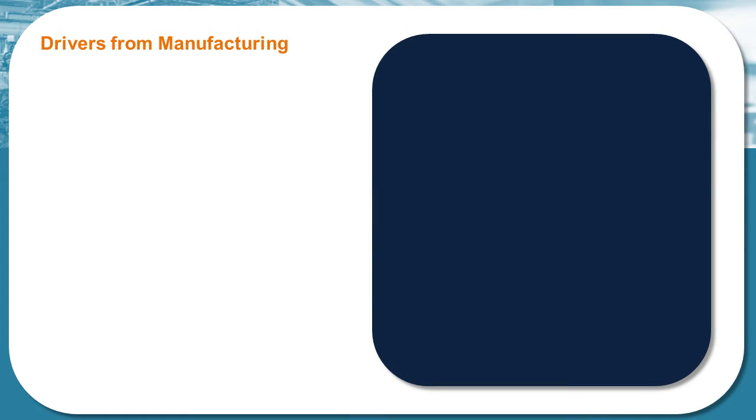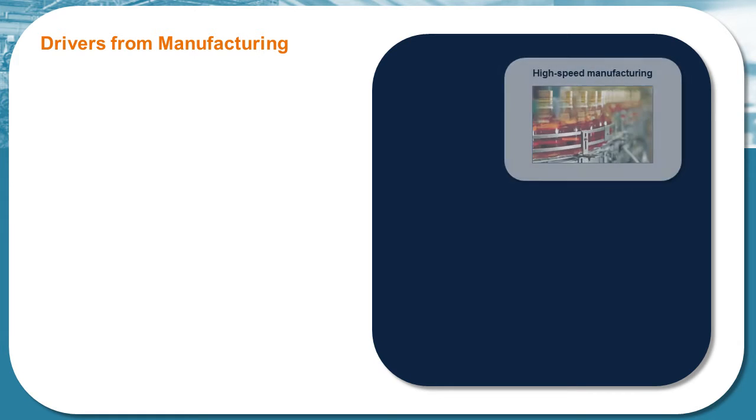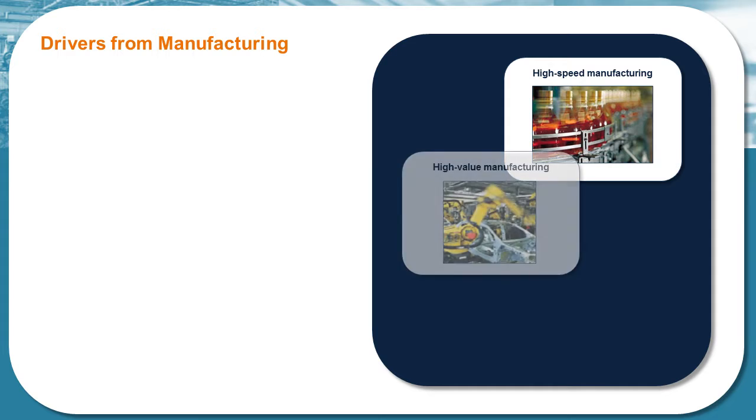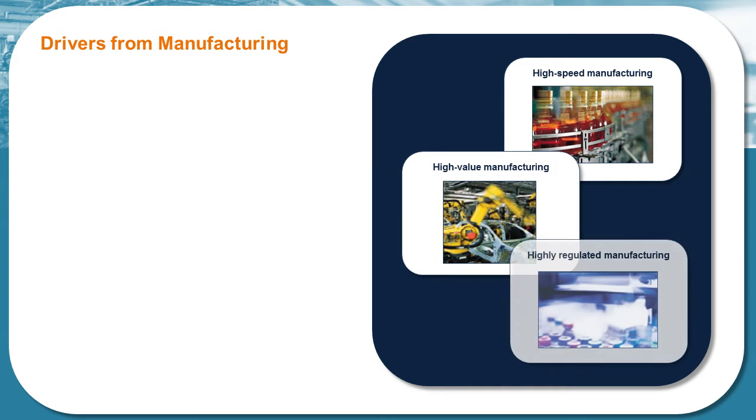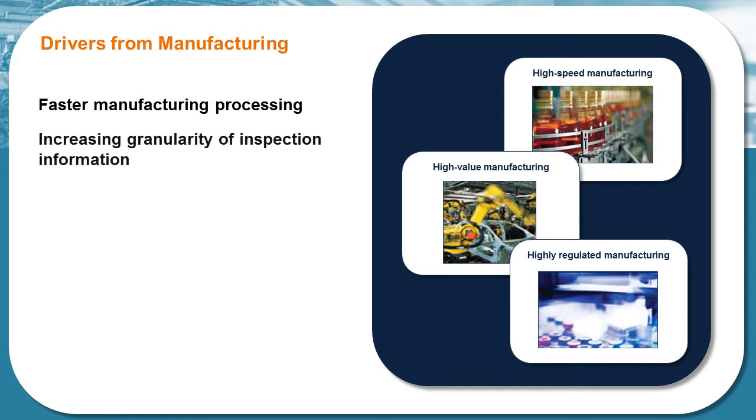So what are these drivers from manufacturing? We've looked at manufacturing characteristics of high speed, high value, high regulation and how these are continuously creating new demands for machine vision systems. As examples, faster manufacturing processing, increasing granularity of inspection information, more data about a product and accuracy of information.